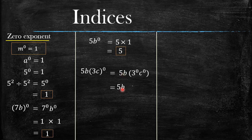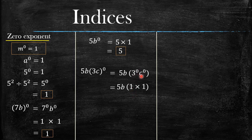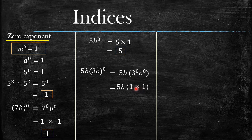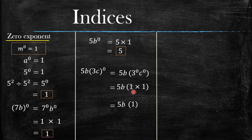We bring down the 5b as it is. Inside the bracket we carry out the zero exponent law: three raised to the power zero gives one, and c raised to the power zero also gives one. We cannot write one and one together as it would look like eleven, so we put a multiplication sign between them. One multiplied by one equals one.